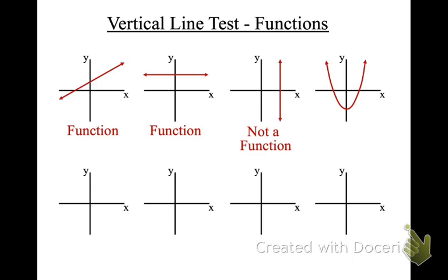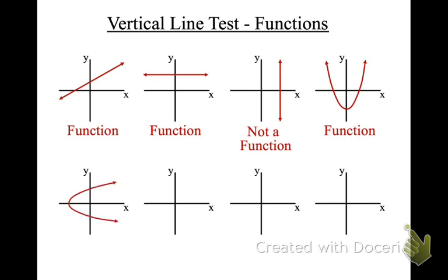This looks like it might not work, but this is a parabola. As we watch our vertical line, it's always at least slanted somewhat, so it never crosses the same point on the red line. It doesn't cross two points at the same given moment in time, so it is a function. In the next case, as I run my vertical line through, you can see that it crosses the graph at two places in the same moment in time — so this is not a function.